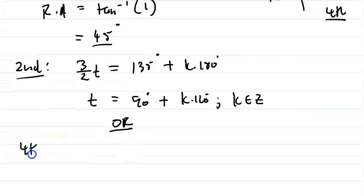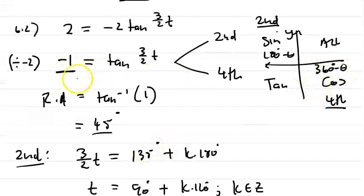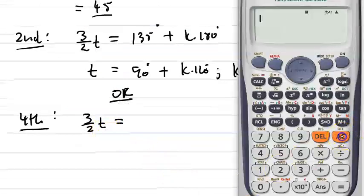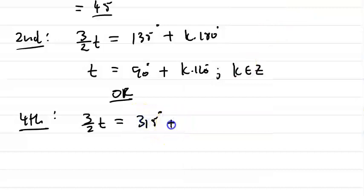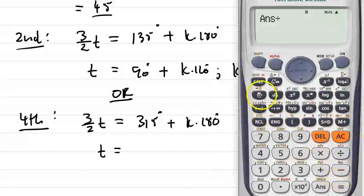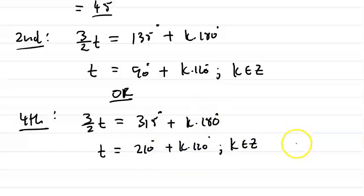For the fourth quadrant: 3/2·t equals 360 minus theta, our reference angle of 45°. So 360 minus 45 equals 315 degrees, plus k·180. Dividing everything by 3/2: t equals 315 divided by 3/2, which equals 210 degrees, plus k·120°, where k is any integer. This is the general solution. In a specific solution, they would stipulate a domain, and we would substitute integer values for k, keeping any answer that lies within that domain.